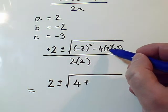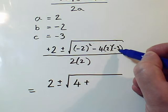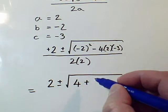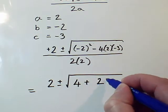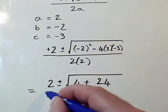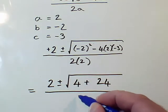And 4 times 2 times minus 3 is 8 times 3, which is 24. So it's 4 plus 24 all over 2 times 2, which is 4.